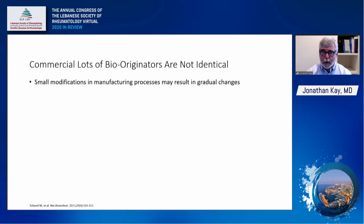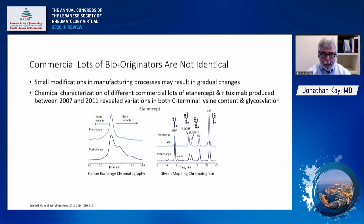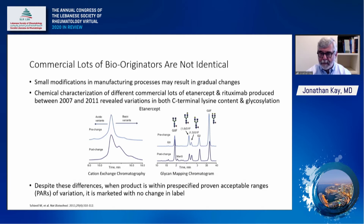Commercial lots of biooriginators are not identical to one another. An important paper published by Martin Schiestl, the chief scientific officer of Sandoz in Nature Biotechnology in 2011, characterized different commercially available lots of etanercept, rituximab, and darbepoetin produced between 2007 and 2011, finding variations in C-terminal lysine content and glycosylation. After a product manufacturer change for etanercept, there were more basic variants and more G0 fucosylation and less G2 fucosylation on the glycan mapping chromatogram. Despite these differences, when within pre-specified proven acceptable ranges, the product is marketed with no change in label, and neither patients nor providers are informed of these variations.